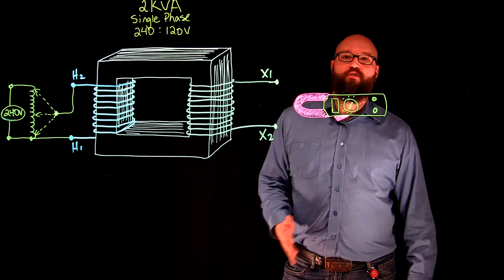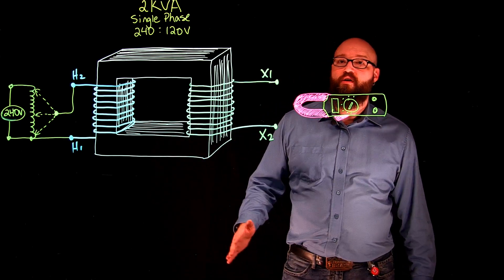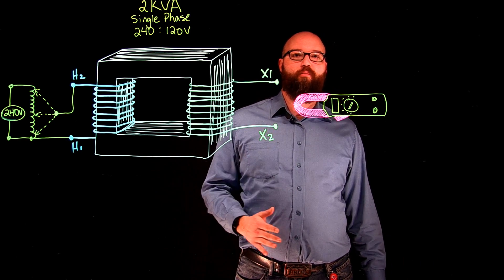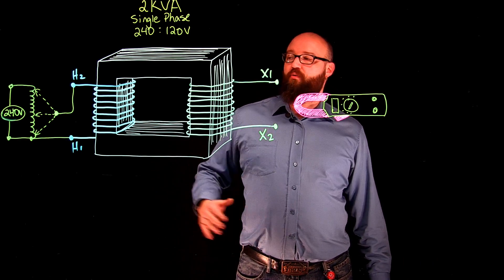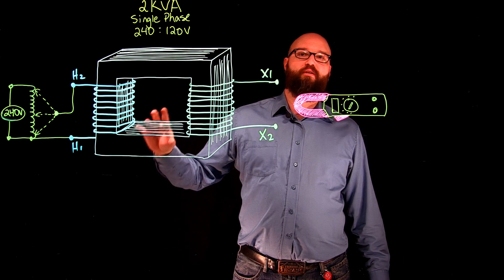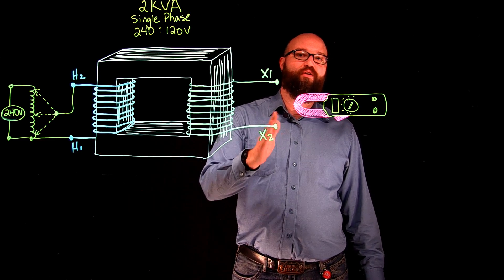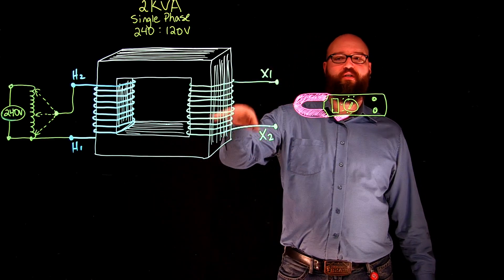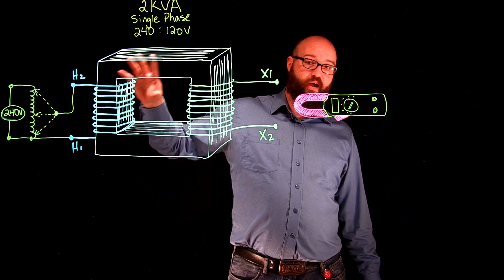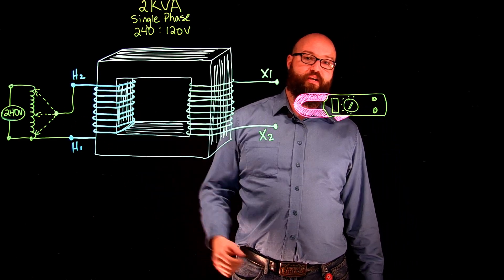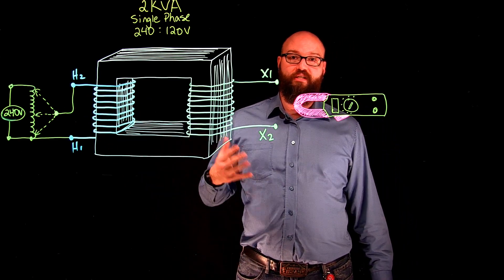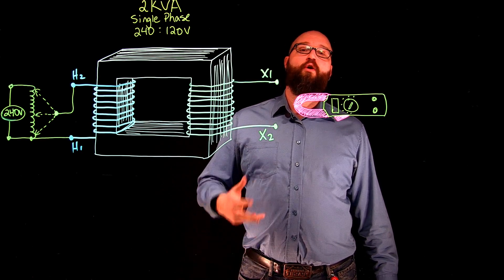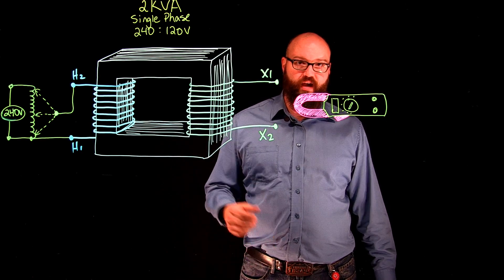So what is a short circuit test on a transformer? Essentially what we're going to do is short out the secondaries on a transformer and apply a voltage to the primary side in order to get rated current on the secondary to flow. If we were to short circuit the secondary side and apply rated voltage on the primary, what we would end up with is a fairly significant current on the secondary.